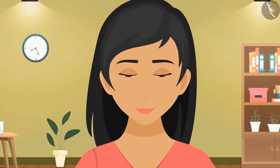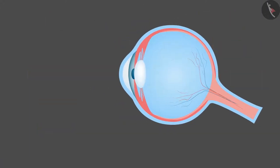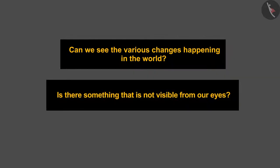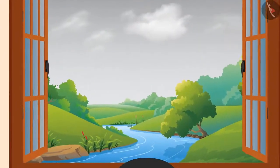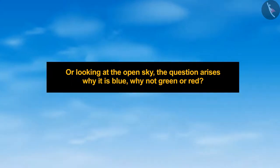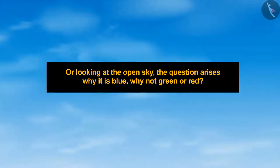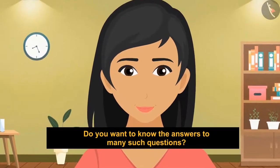We got to know about the parts of the eyes, the defects of vision and their corrections in our previous videos. We also discussed how sensitive and complicated our eyes are and how we can see distant and nearby objects. But the question is: can we see all the various changes happening in the world, or is there something not visible to our eyes? Questions like why we see a rainbow after rain, or why the sky is blue and not green or red, arise in my mind. Stay with the video till the end to find the answers.